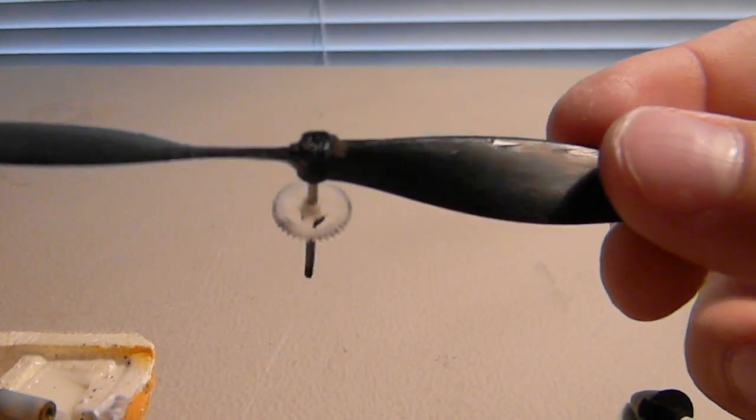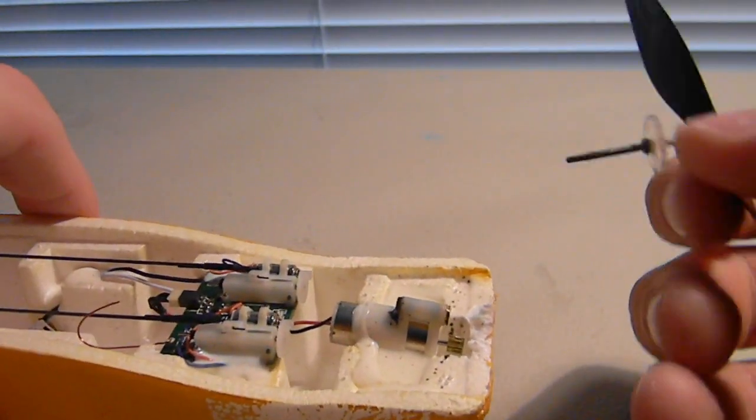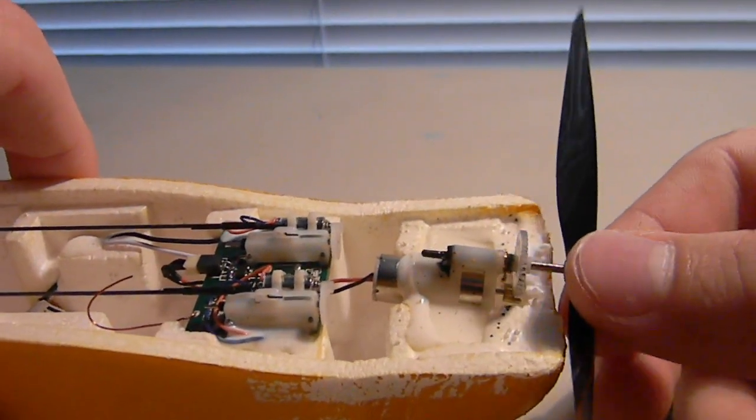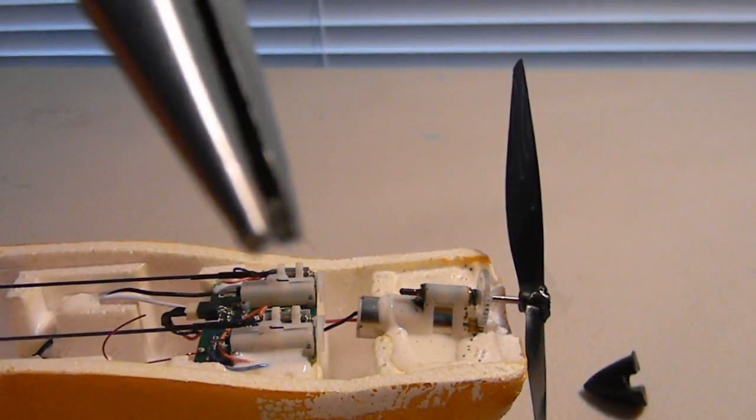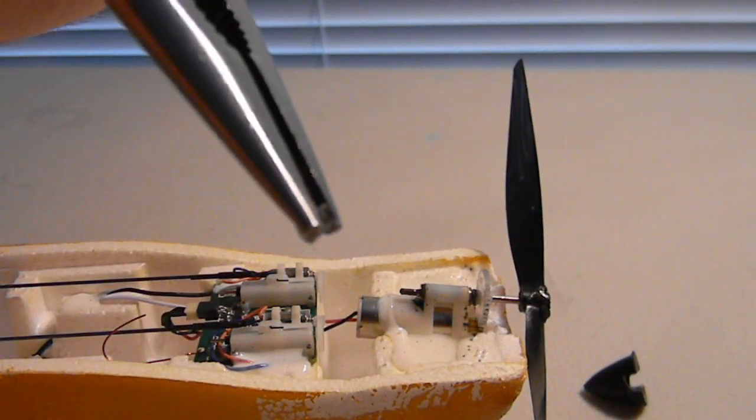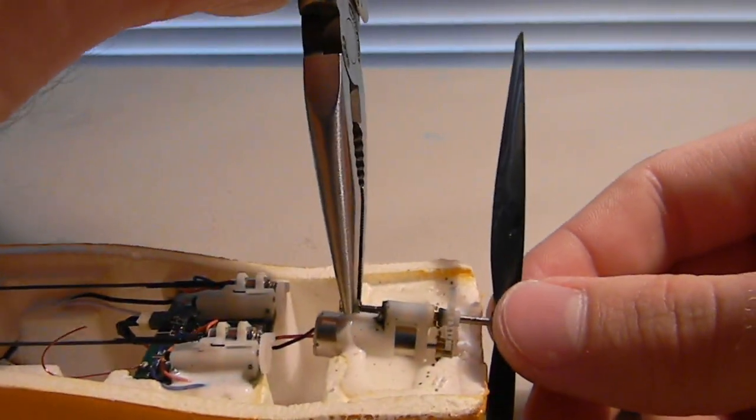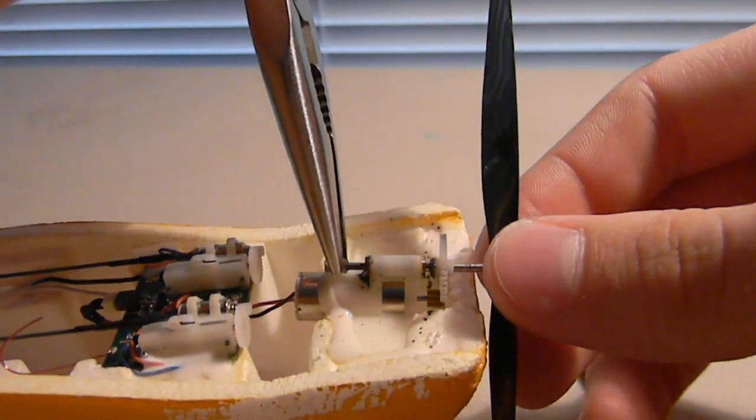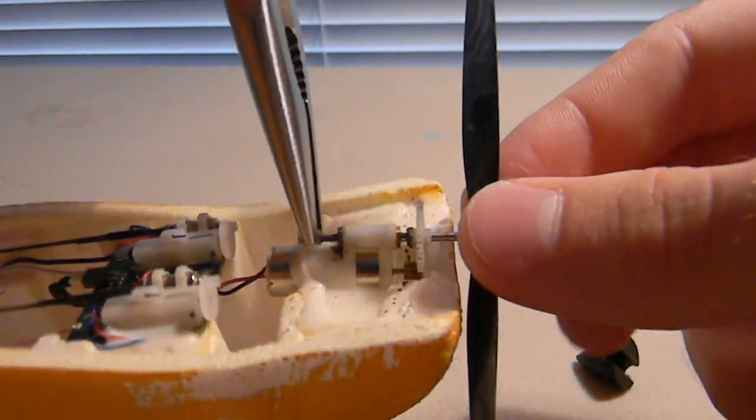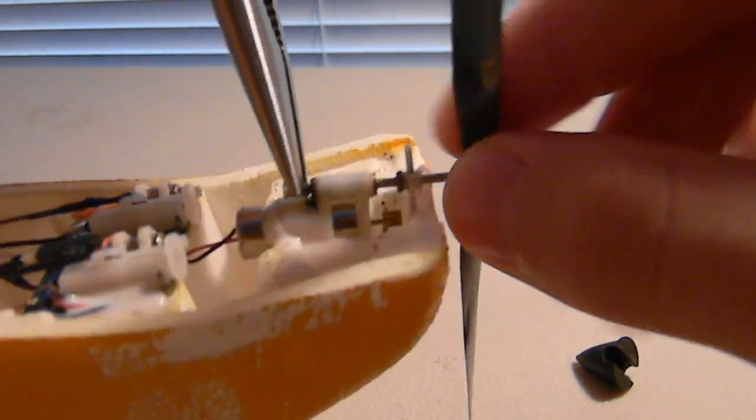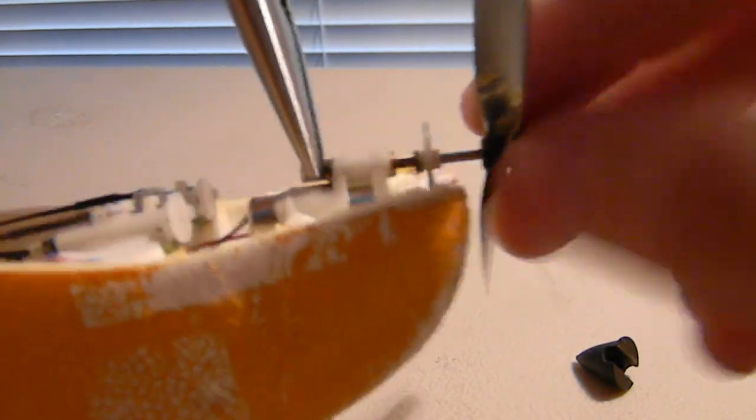Once you have it screwed in there, you can take the other half of your plane and stick it in there. Take that clear piece you had before, stick it in your needle nose pliers, and put it on the end of that shaft. Don't turn the prop this way, turn it counterclockwise and screw that in.